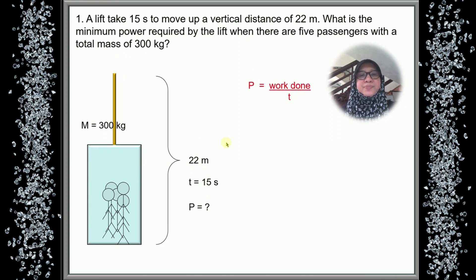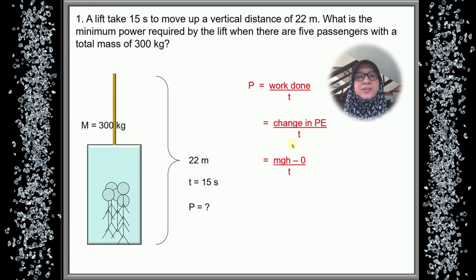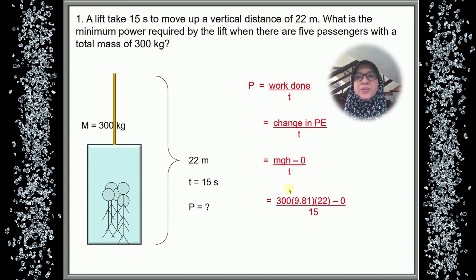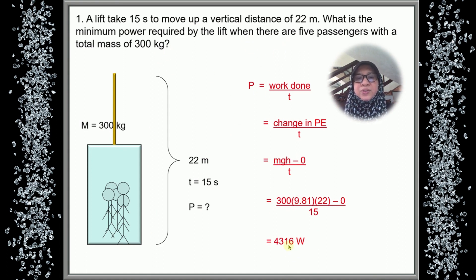We are going to find the power required using the formula: power equals work done divided by time taken. The work done is the change in potential energy divided by time taken. Using the work-energy theorem, the change in potential energy is MGH minus 0. Starting from the bottom, potential energy is 0 and at the top is MGH. So M is 3,000 kg, g is 9.81, H is 22 meters, minus 0, divided by 15, giving 4,316 watts. Rounded to 3 or 2 significant figures: 4,300 W or 4,310 W.